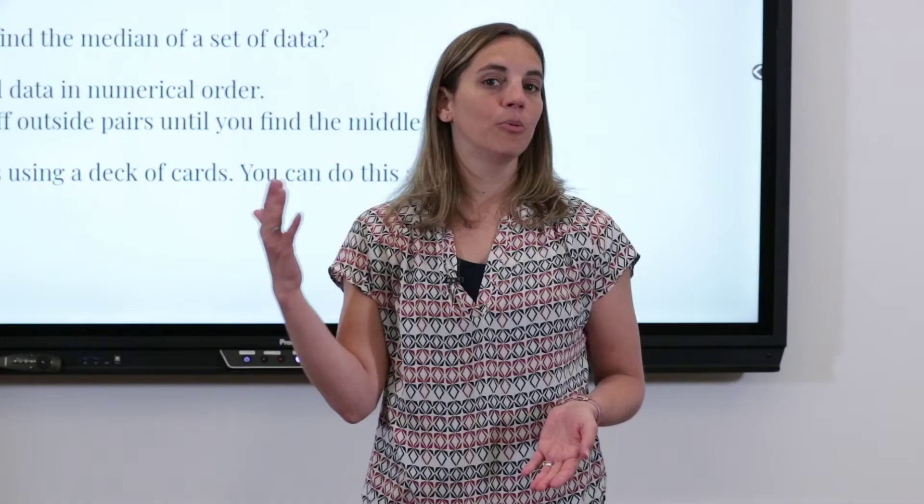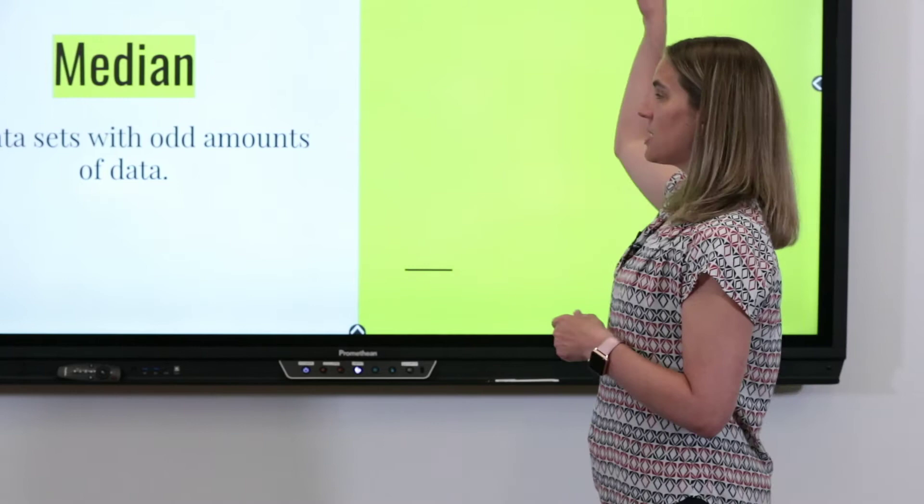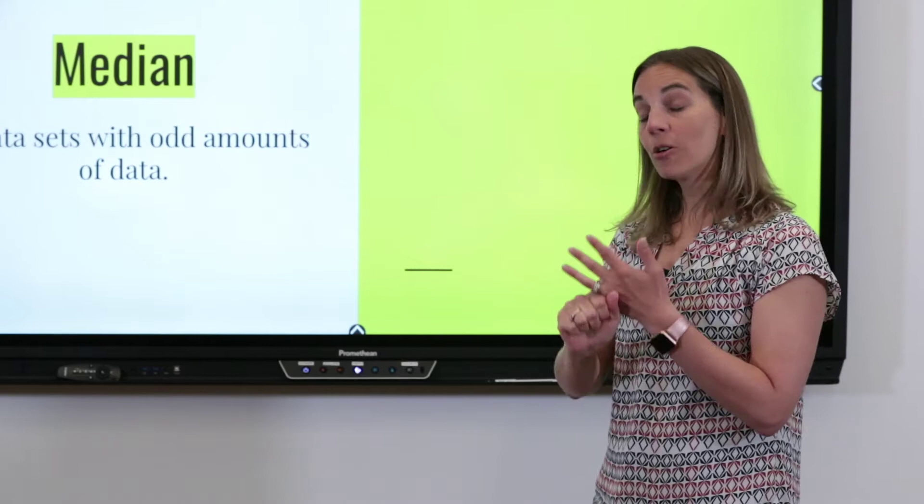You can do this over and over again with your own deck of cards as many times as you want. Just remember to always put them in numerical order from least to greatest. Now I'm going to give you a set of data and we're going to go through each step. Put your numbers in numerical order, and then cross off outside pairs until you find the one in the middle.